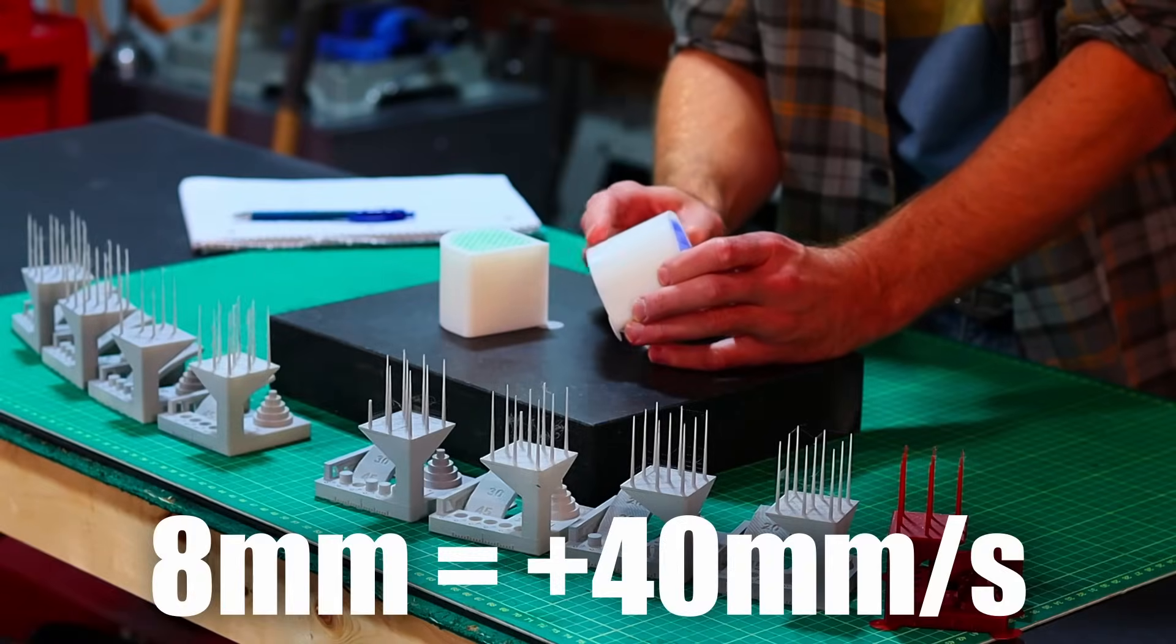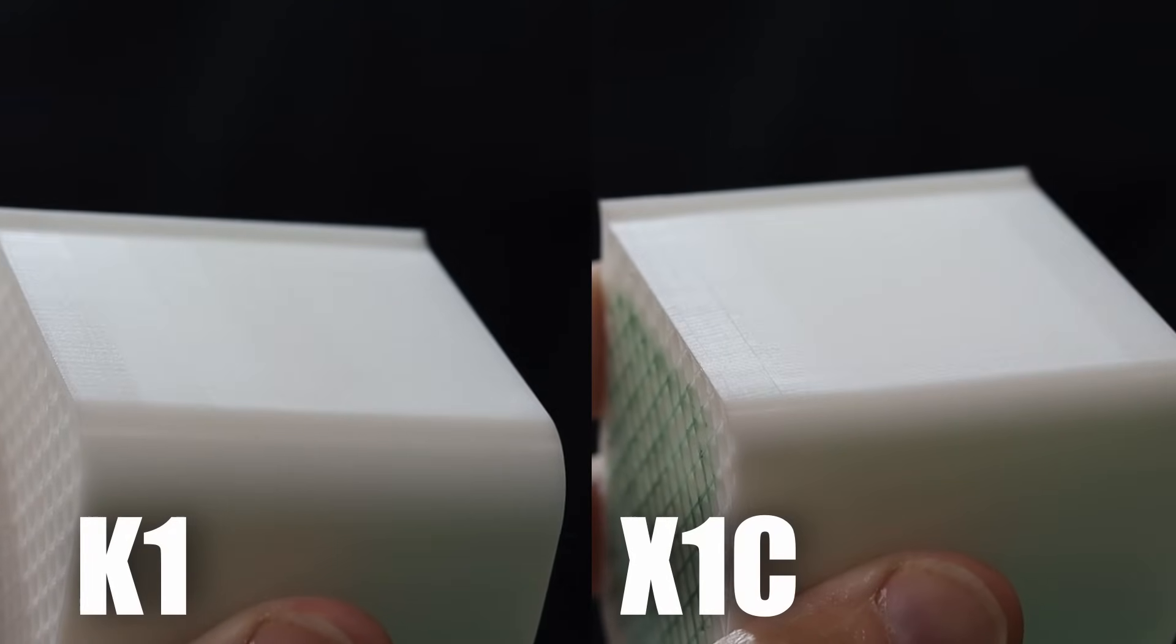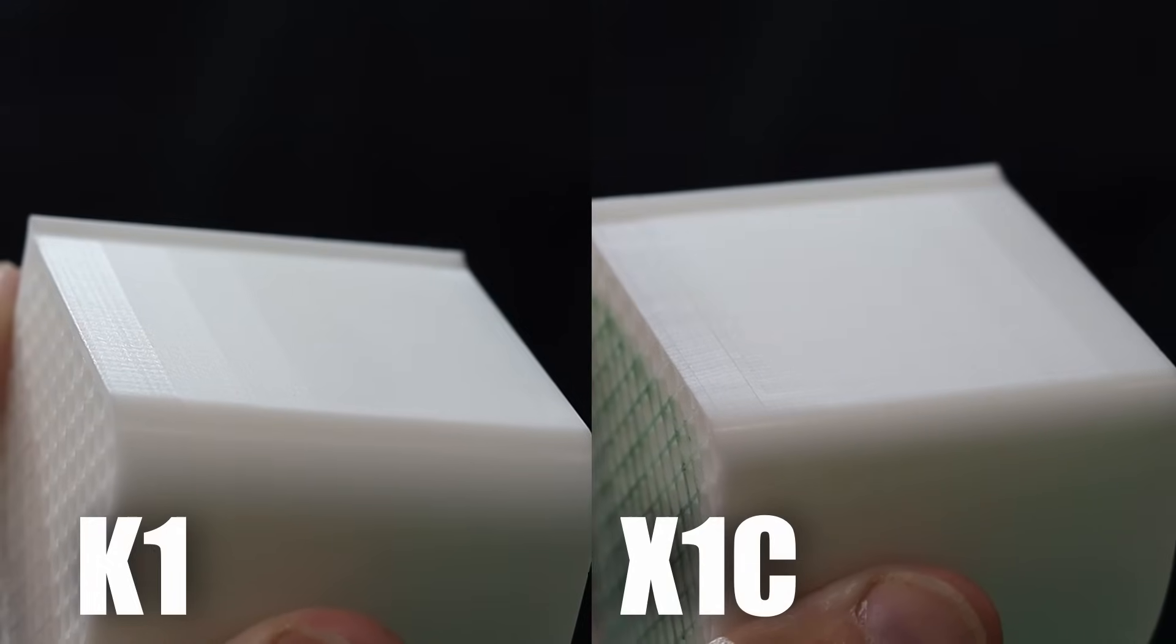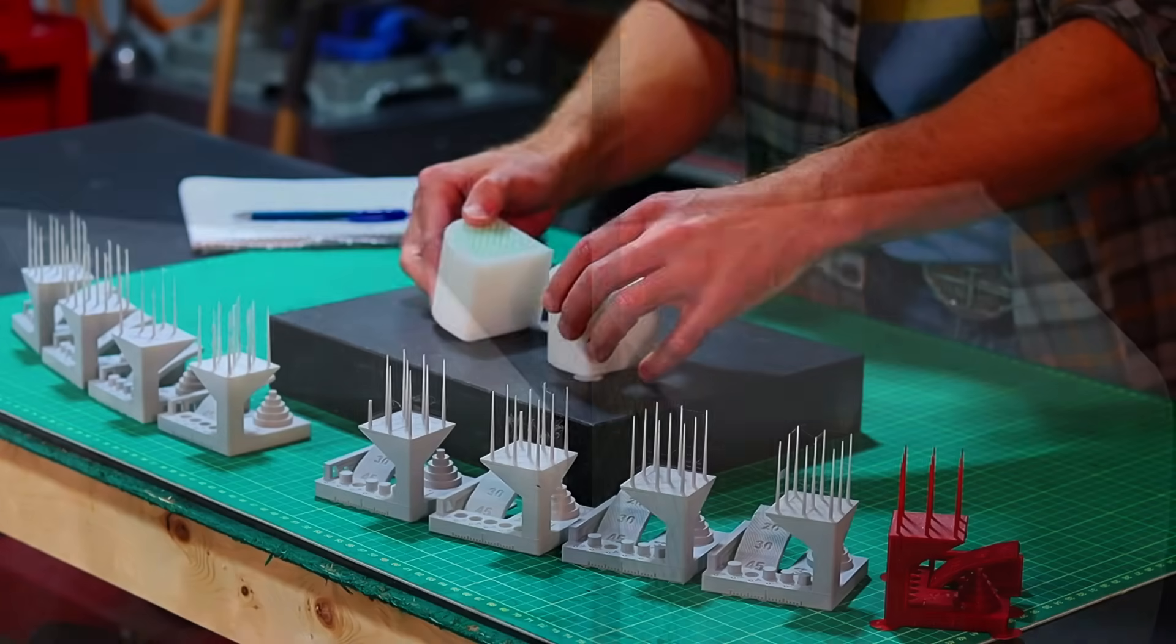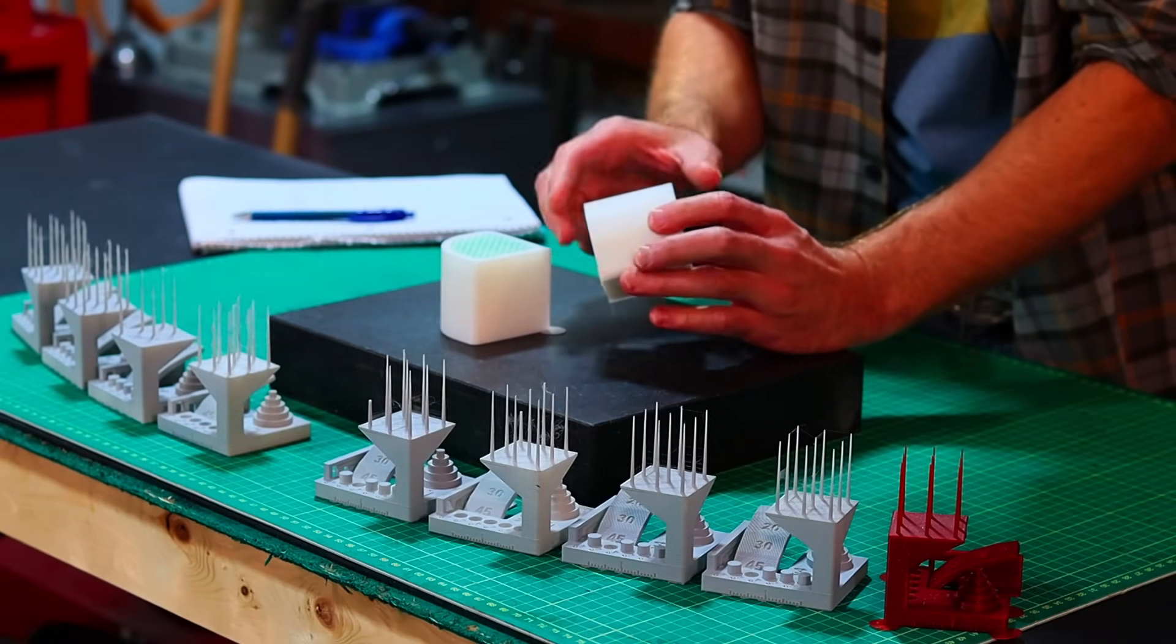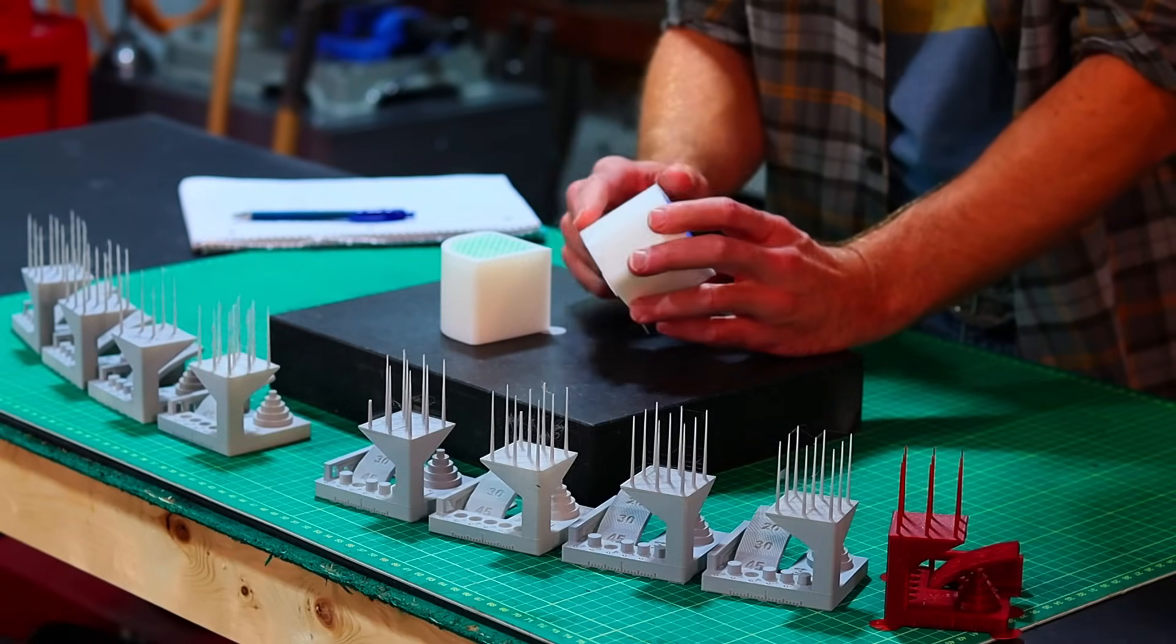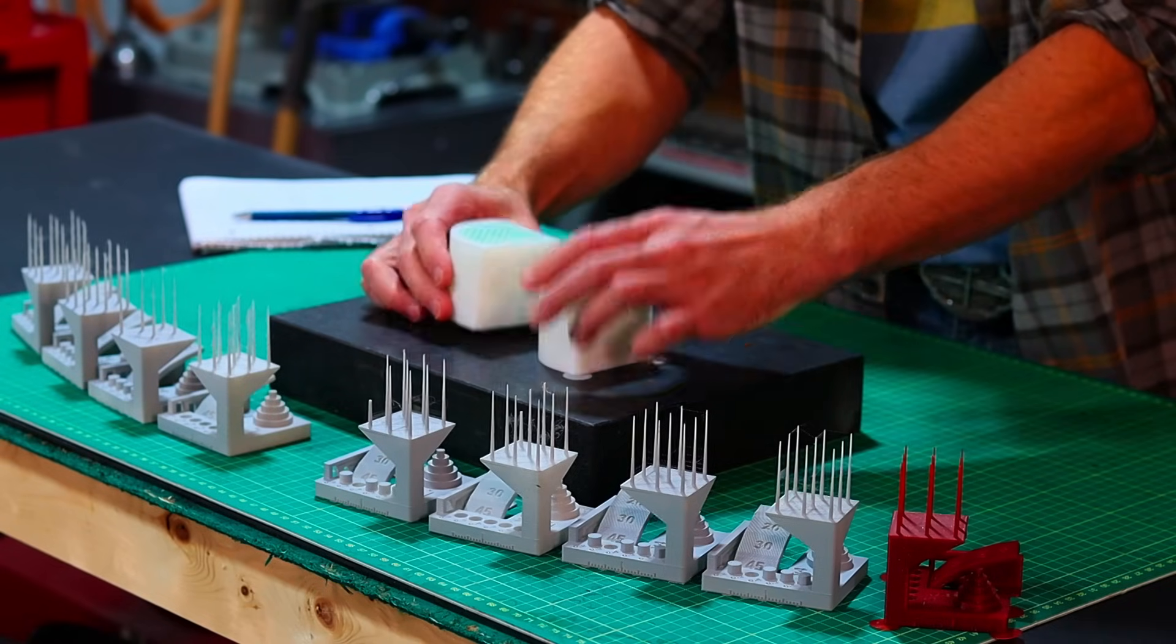That goes for both printers. I would say overall the Bamboo is a little bit smoother in the outer wall extrusion than the Creality. It's not far off. The Creality on the slower speed had a few more of those vertical lines on it than the Bamboo did.